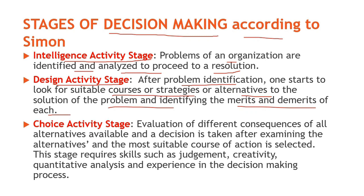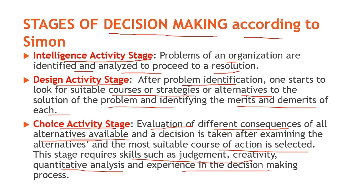Third stage aati hai choice activity stage. In this stage, evaluation of different consequences of all the alternatives available is done and a decision is taken after examining the alternatives — the most suitable course of action is selected. Is stage mein sabhi alternatives ka mulyankan ya evaluation kiya jata hai, aur uske baad sahih vikalp ko choose kiya jata hai. This stage requires skills such as judgment, creativity, quantitative analysis, and experience in the decision making process.